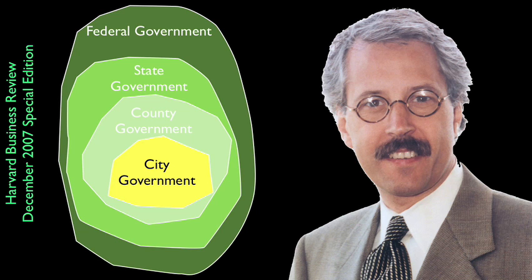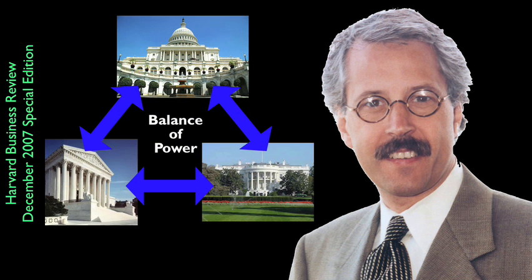Remarkably, the constitutional organization of the United States follows the viable system model, not a typical organization chart. In struggling to embrace the inherent paradox between the relentless pursuit of efficiency and the restless exploration of new strategic options, managers can learn something from constitutional democracies, particularly the United States. Over more than two centuries, America has proven itself to be far more resilient than the companies it has spawned.